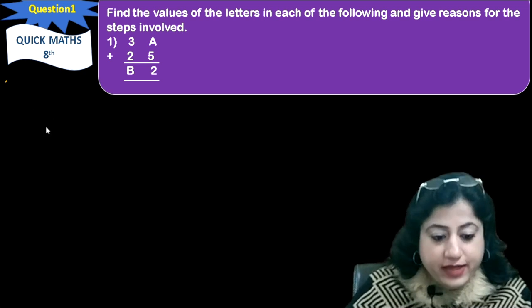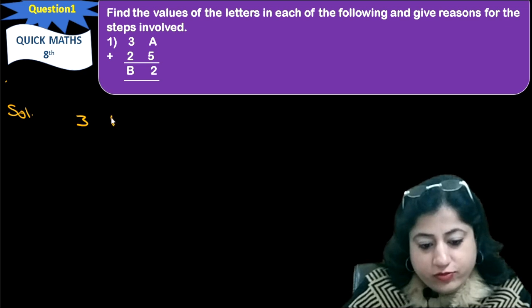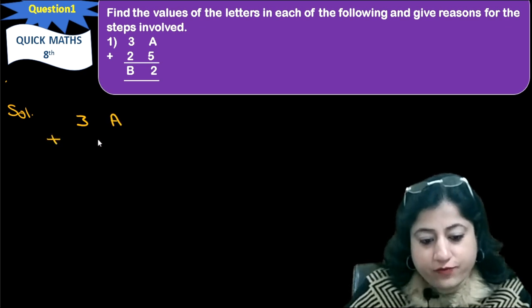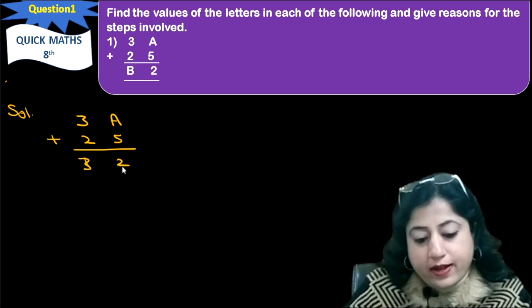So we will write it as it is. First of all, it is 3A with plus sign 2, 5. It gives B and 2.